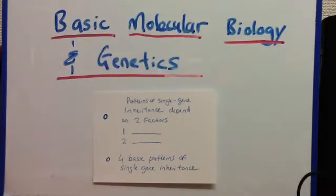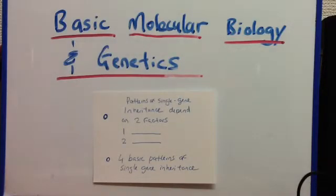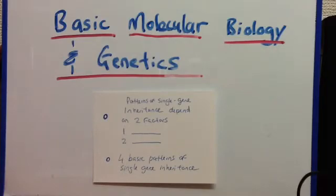Autosomal recessive — you would need to have both of the alleles. Autosomal dominant, the second one, you would just need one of the alleles. Same thing for X-linked recessive or X-linked dominant.